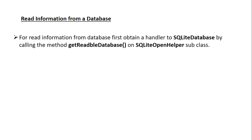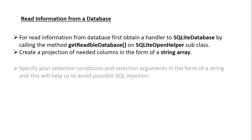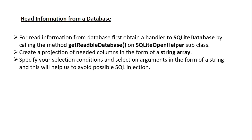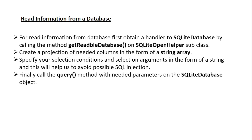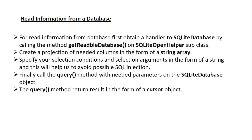Now we can learn about how to read information from a database. First, obtain a handler to the SQLiteDatabase by calling getReadableDatabase on the SQLiteOpenHelper subclass. Create a projection of the needed columns in the form of a string array. Specify your selection conditions and selection arguments as strings — this helps avoid possible SQL injection. Finally, call the query method with the needed parameters on the SQLiteDatabase object; the query method returns results in the form of a Cursor object.